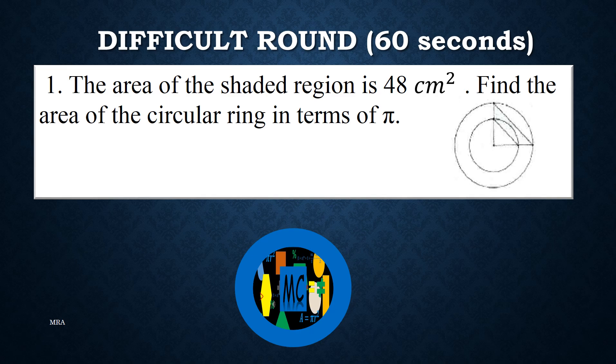Problem 1: The area of the shaded region is 48 cm². Find the area of the circular ring in terms of Pi.